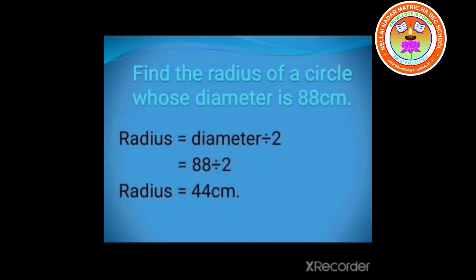Second one: Find the radius of a circle whose diameter is 88 cm. Here, diameter given is 88 cm. What's the formula of radius? Radius is equal to diameter divided by 2. So, 88 divided by 2. The answer is 44 cm. Radius is equal to 44 cm.